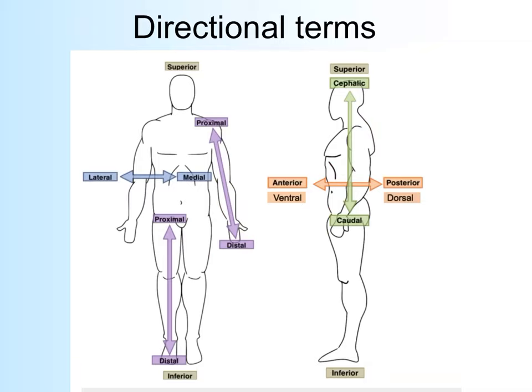Moving on to directional terms, letter B. When talking about the relationship between parts of your body or an organ, you use these anatomical terms — we'll use these all semester. Starting with anterior and ventral: both refer to anything toward the front of your body. Your umbilicus, or belly button, is on the anterior or ventral surface. Posterior and dorsal mean the same thing — the back. The trapezius and lats are posterior or dorsal muscles. Anterior/ventral and posterior/dorsal are opposites and can be used interchangeably.